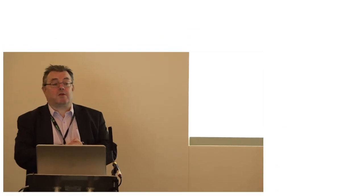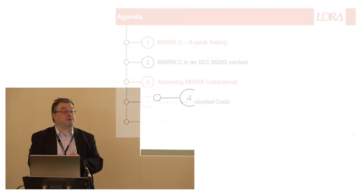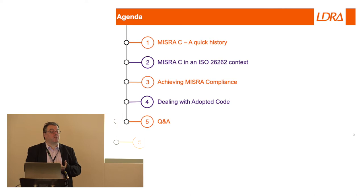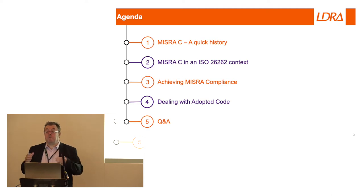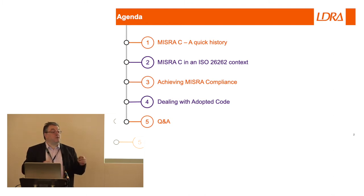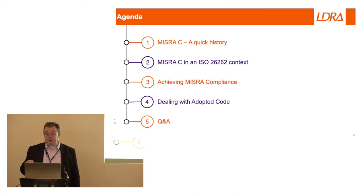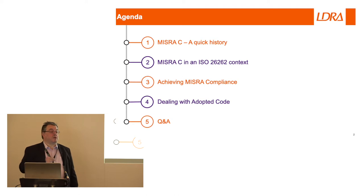What am I going to talk about? Firstly, some of you may have seen the first couple of slides but I'll do it anyway: a quick history of where MISRA came from, about MISRA C in the 26262 context, MISRA compliance — which in many ways is the important bit: how do you tick the boxes that go to your safety case and say 'I am MISRA compliant' — and that leads into dealing with legacy, existing, or as we call it, adopted code.